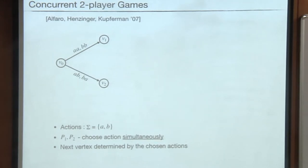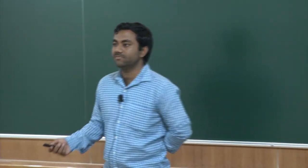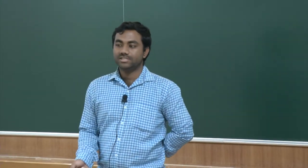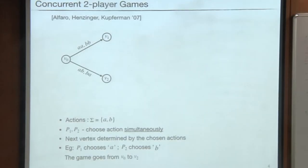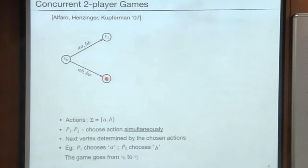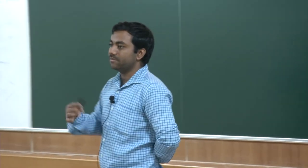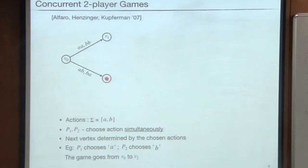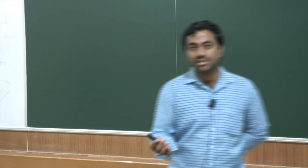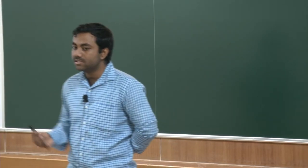The next vertex is determined by the chosen actions of the players. For example, if player 1 chooses A and player 2 chooses B, since A,B is in that transition, the game proceeds from V0 to V2. The main difference from the turn-based model is that here players choose actions simultaneously, whereas in turn-based games players choose one by one.